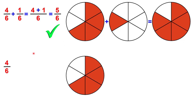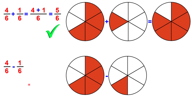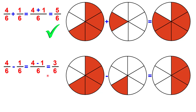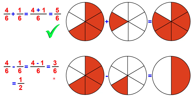Now let's do the same with subtraction. We have 4 portions, 4 slices, and we subtract 1. Obviously the result will be 3. Again, if you have the same denominator, the result will have the same denominator, and you just need to subtract the numerators: 4 minus 1 is 3. However, the result must always be simplified or reduced. So 3 over 6 is not simplified — you can divide both 3 and 6 by 3. 3 divided by 3 is 1, and 6 divided by 3 is 2. So the result will be 1 over 2, which is half. You can also see it here on the right: if you had 4 over 6 and reduced by 1 over 6, you get 3 over 6, which is half.